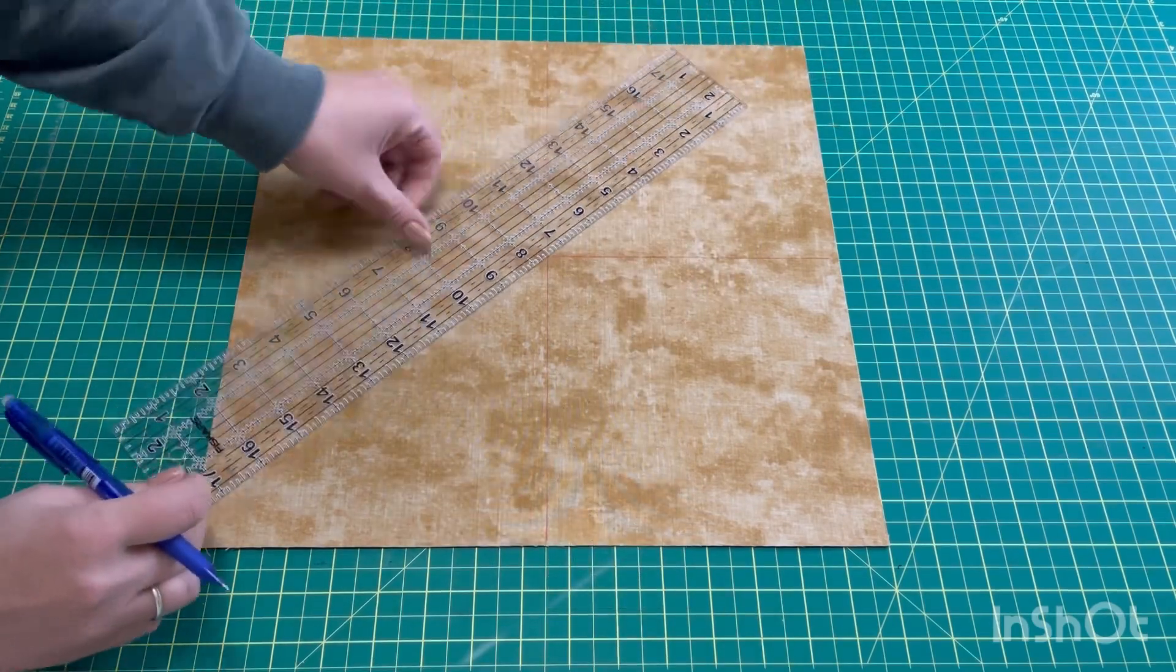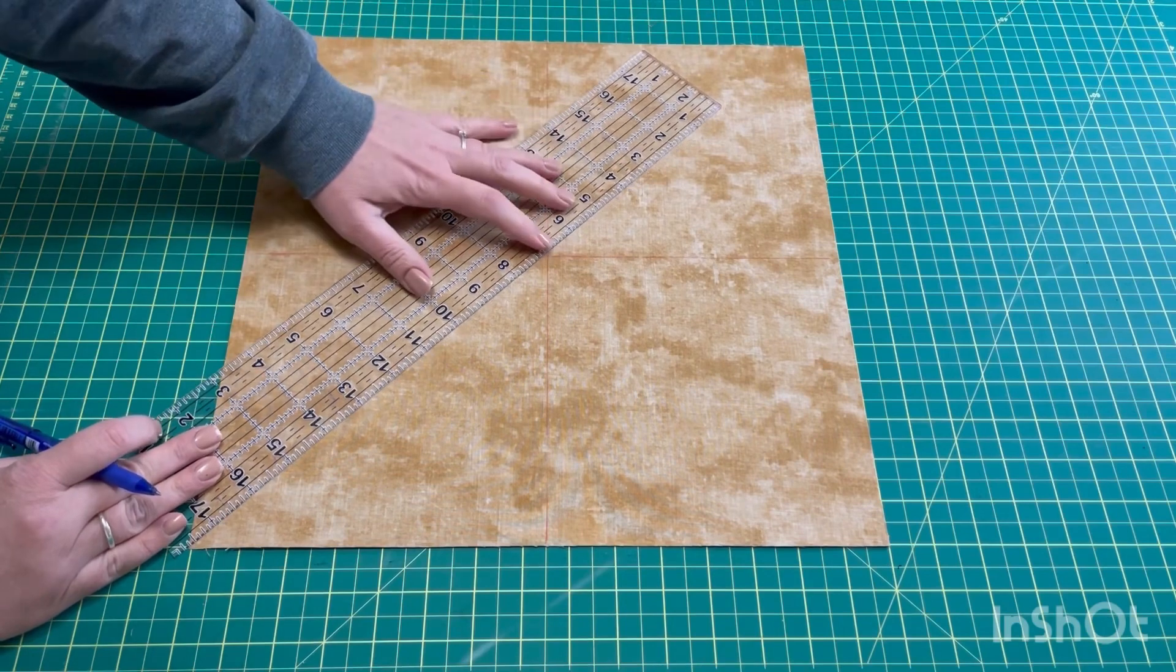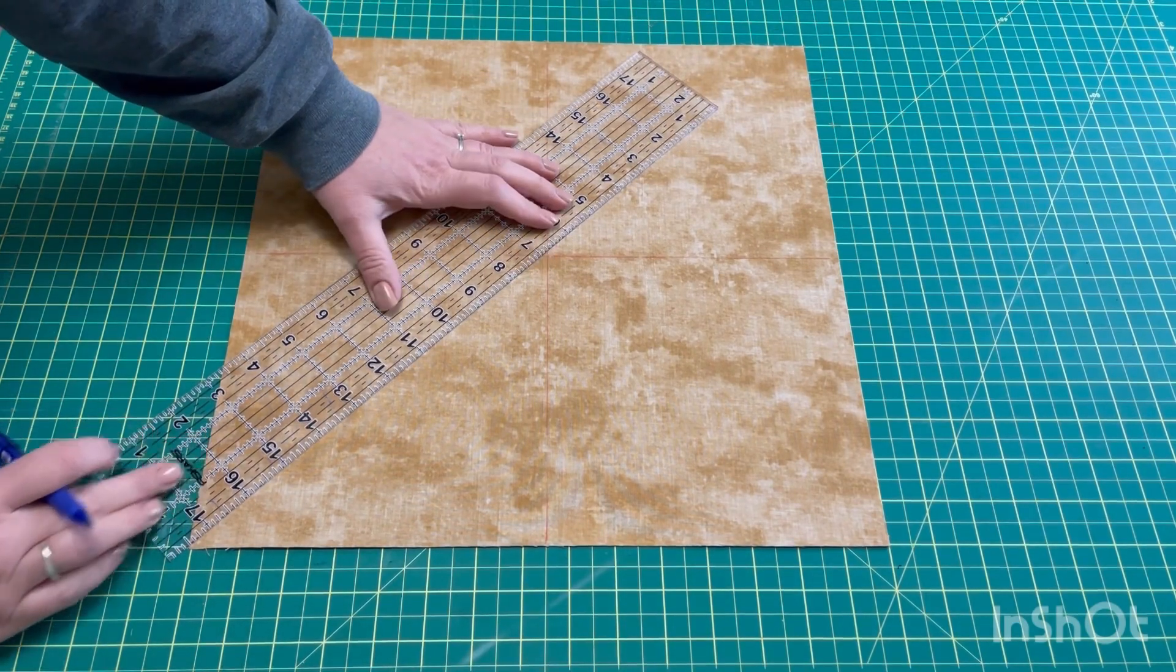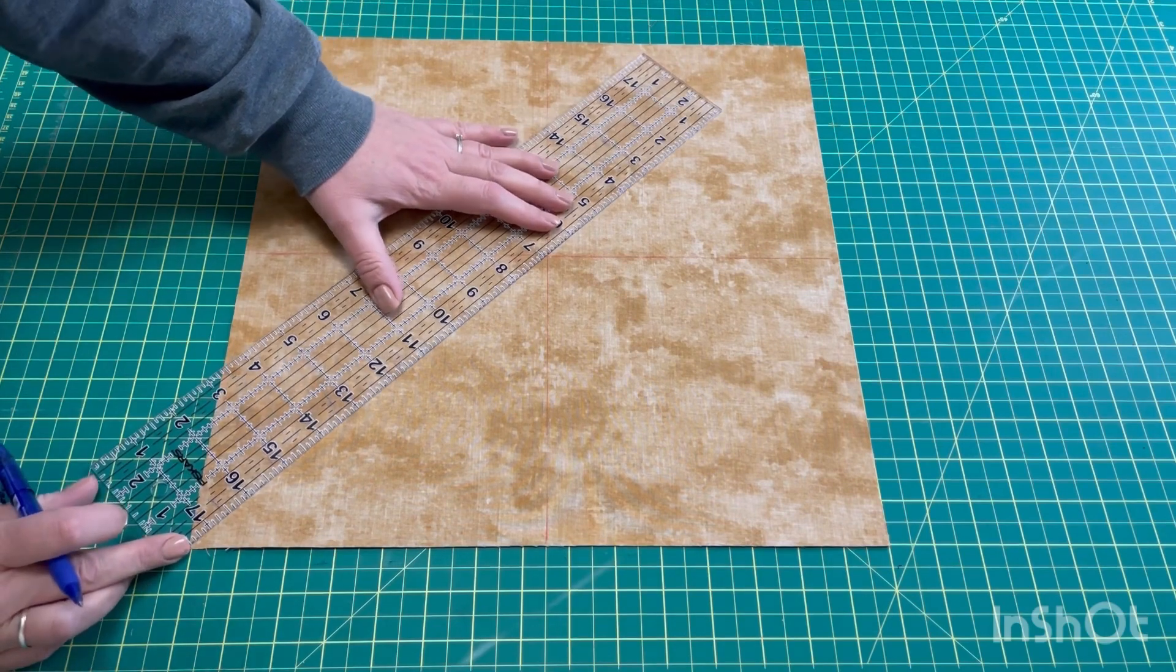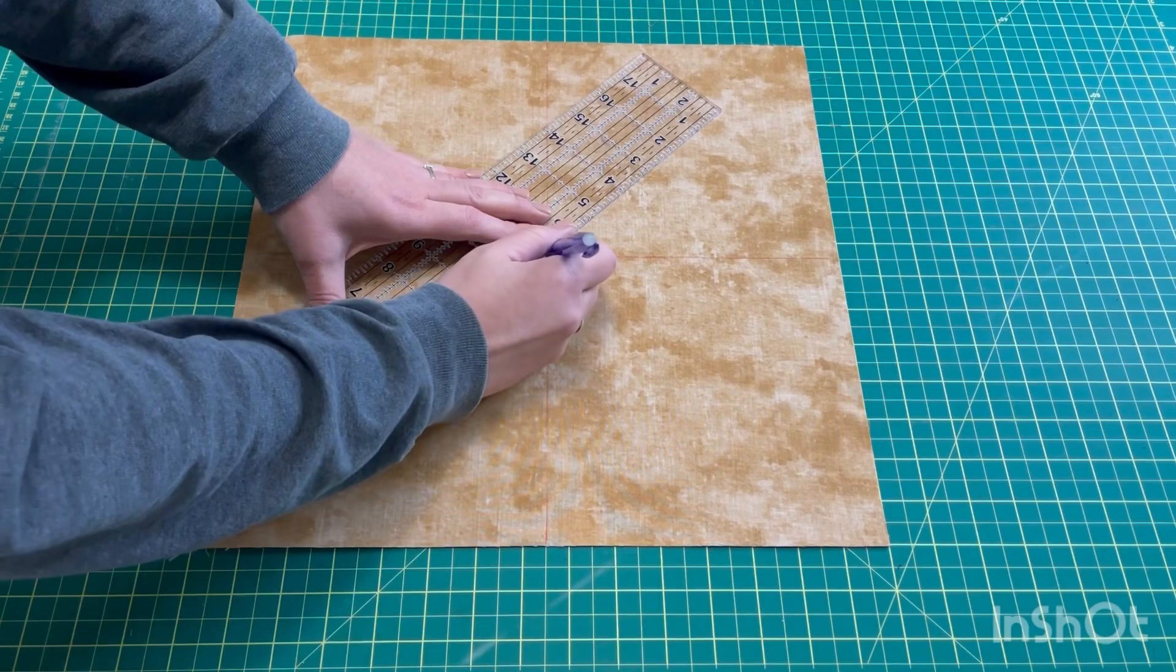Now I need to start with the diagonals and my ruler isn't long enough to go from corner to corner, so I'm going to line it up with the center point that I have there with my red lines and then the corner here, draw this half and then move it up and draw the other half. So from center point to the corner, draw a diagonal line.